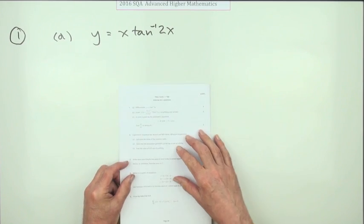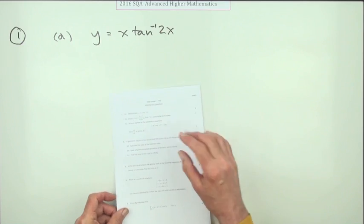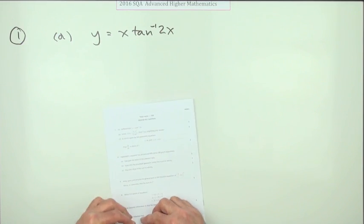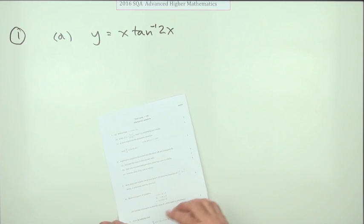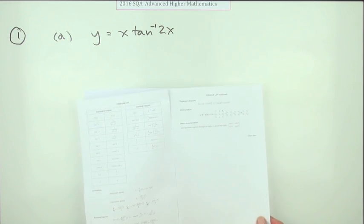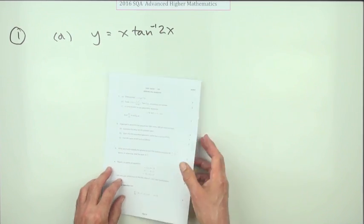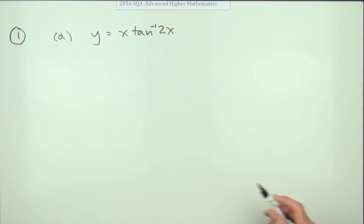So number one then, from the 2016 Advanced Higher Maths. A three-part differentiation question to start with, eight marks, and it comes with answers. Right, what's the first one? Three marks for this.